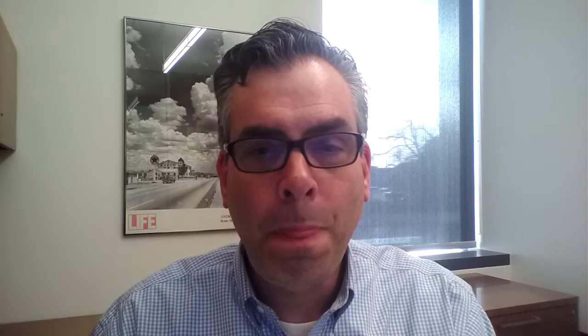Armentano also does a good job describing problems with the neoclassical notion of entry barriers — not legal barriers to entry, but naturally occurring economic barriers like product differentiation or economies of scale. As he points out, firms cannot force differentiated products onto the market. If a firm produces a product that consumers view as distinct from those of other sellers, that's just another way of saying consumers prefer the characteristics of one product to another. In other words, product differentiation reflects the preferences of consumers — it doesn't impose something artificial or false on consumers.